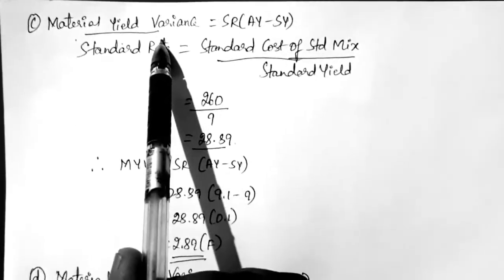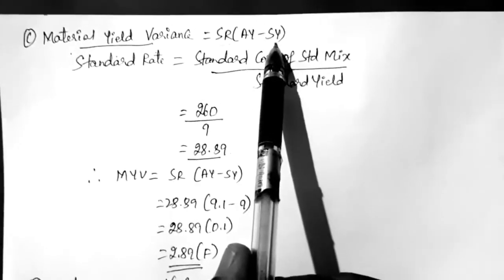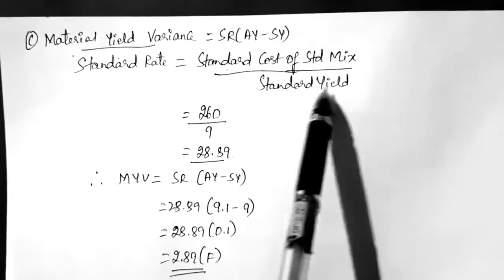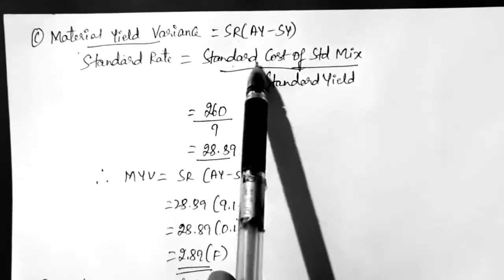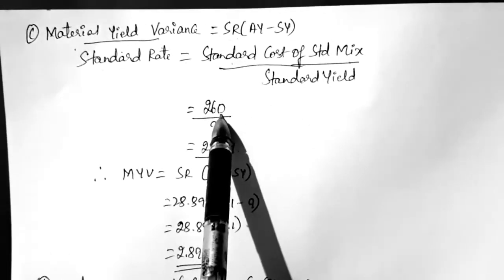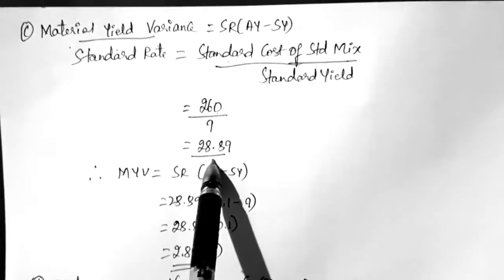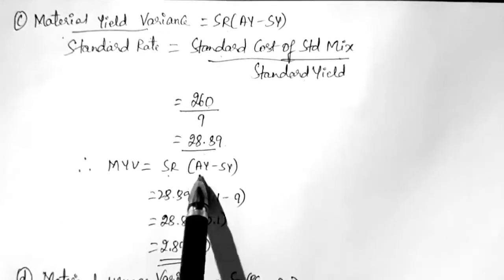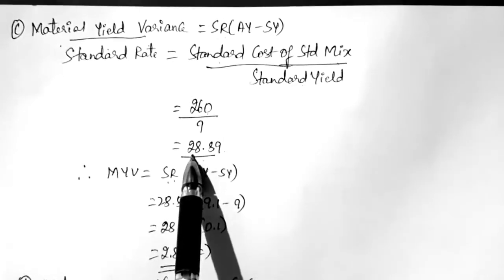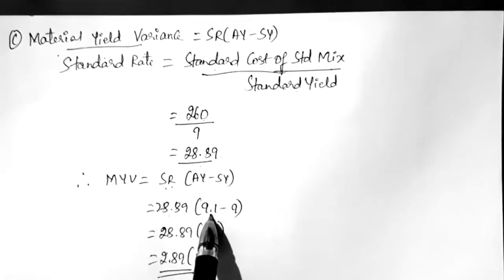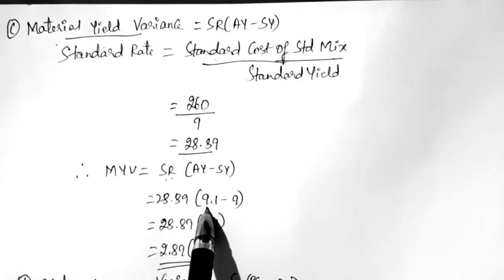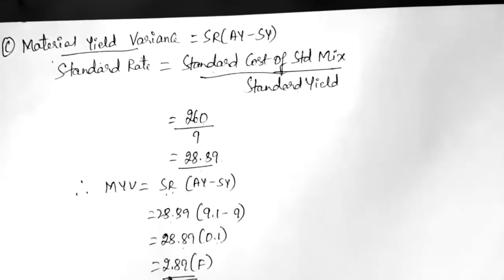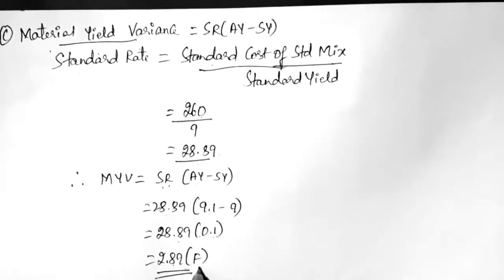Now let us find out material yield variance. The formula is: standard rate × (actual yield − standard yield). Standard rate = standard cost of standard mix ÷ standard yield = 260 ÷ 9 = 28.89. Actual yield is 9.1 minus standard yield 9 gives 0.1, which is a positive balance. Multiplying 0.1 × 28.89 gives 2.89. Since it is a positive number, we record it as favorable.